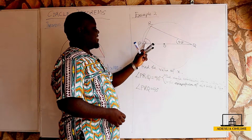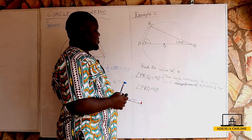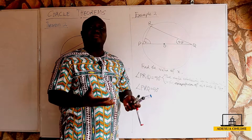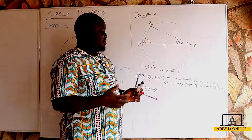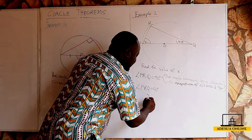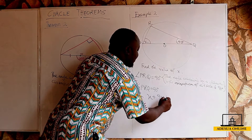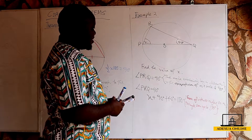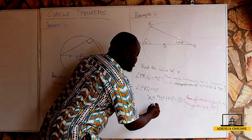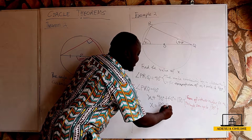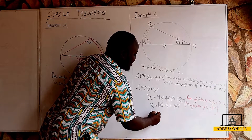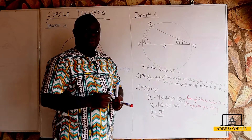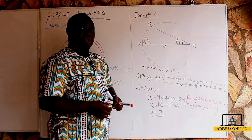Now solving for x: we know this angle is 90, this angle is 40, and this angle is x. PQR is a right-angled triangle, so we use the sum of interior angles of a triangle. We get x plus 90 degrees plus 40 degrees equals 180 degrees. Solving for x: x equals 180 minus 90 minus 40, which gives x equals 50 degrees. Now let's move to Theorem 3.